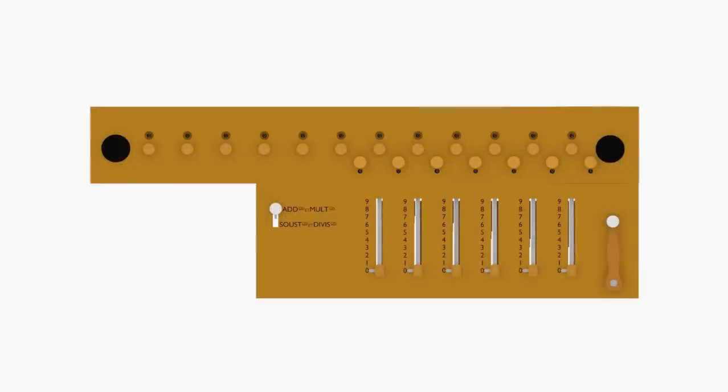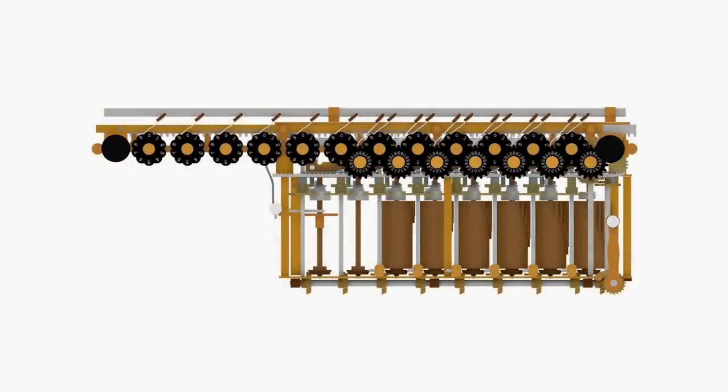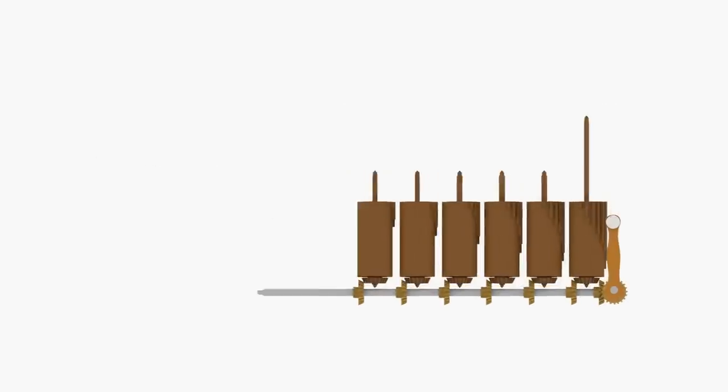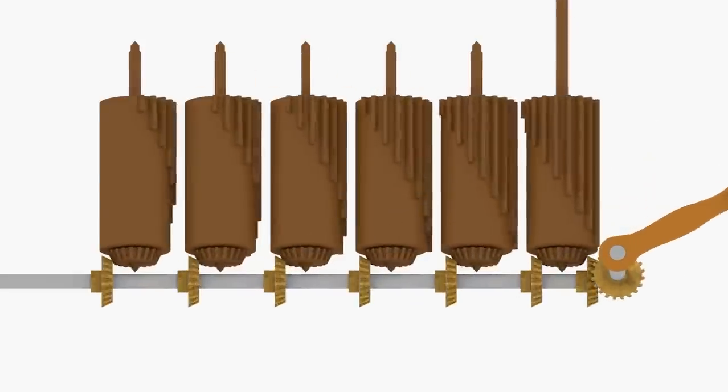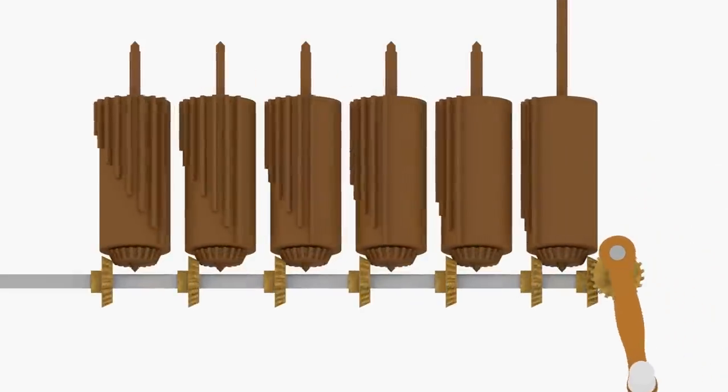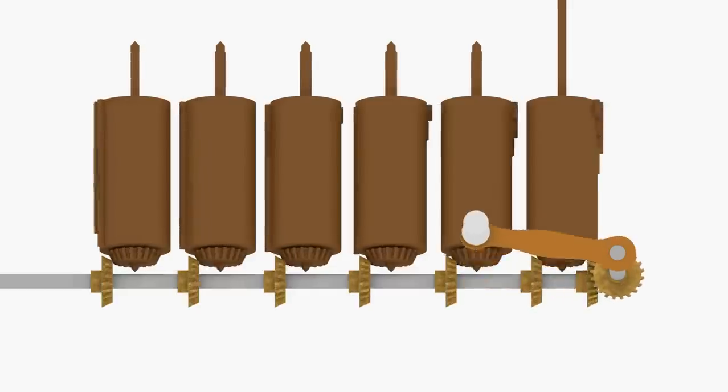Let's take a closer look at what happens when we add a number to the accumulator. Inside the Arithmometer is a set of stepped cylinders that rotate when you turn the crank. Each stepped cylinder is covered with nine cogs of increasing length.